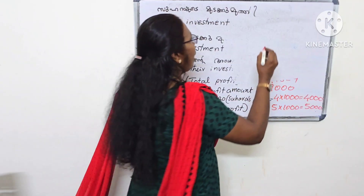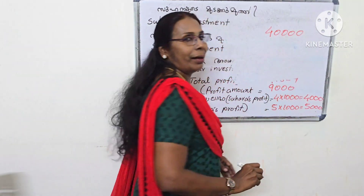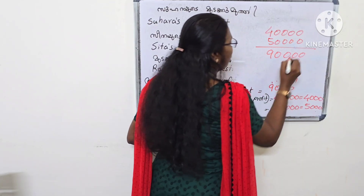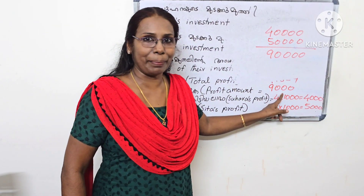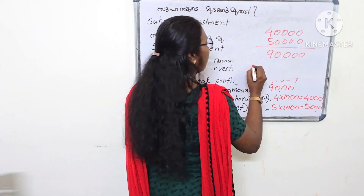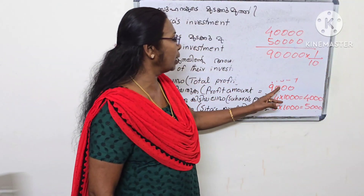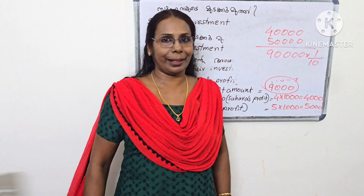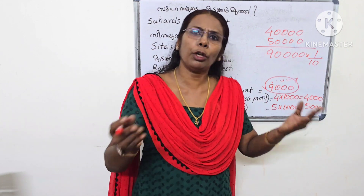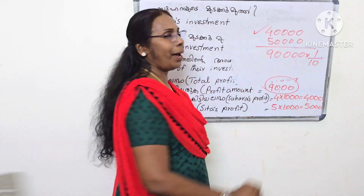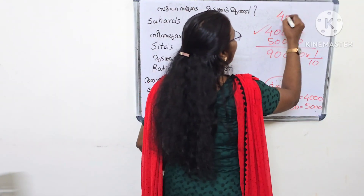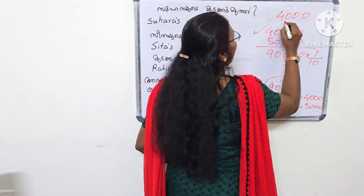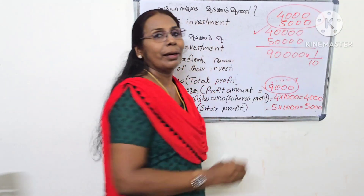Suhara's share is 4,000 rupees and Sida's share is 5,000 rupees. The total profit is 9,000. Suhara gets 4,000 and Sida gets 5,000. That is how the profit is divided.